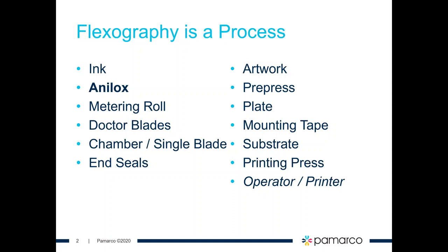We've talked in the past about the flexographic printing process, and the heart of this process is the anilox roll. There are many other aspects of the process that affect production, affect quality, and affect your ability to meet the customer's expectations — Delta E if you're managing by Delta E, solid ink density, sharpness of dot reproduction, and so on. But the anilox roll, because it is the key part of the ink metering system and the volume that it carries, is critical in being able to hit the Delta E or your solid ink density. We want to make sure that anilox roll is well understood, that you're using the best possible technologies, and that you're maintaining that roll in as pristine a condition as possible.